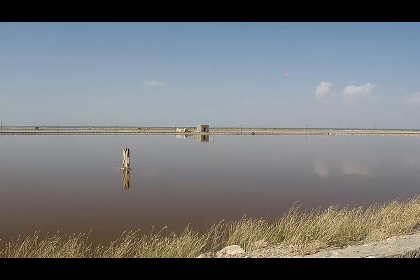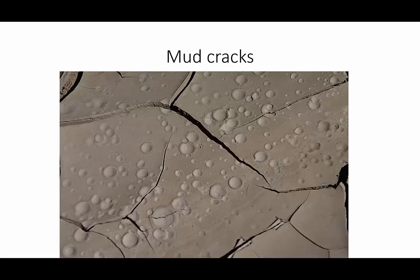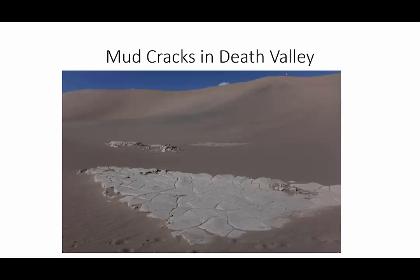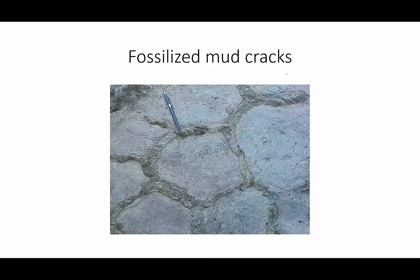What would happen if a mudflat or a desert lake dried up? Well, the mud would dry and shrink, creating mud cracks. Here are some mud cracks that even contain the craters of little raindrops. These are mud cracks in a little playa between the sand dunes in Death Valley. It will probably rain and this will become mud again. However, if the cracked mud is covered by sediment and later becomes shale, it will retain the mud cracks. So if you find shale with mud cracks, you can be certain that the mud was deposited on land where it could dry up.